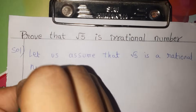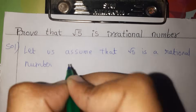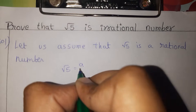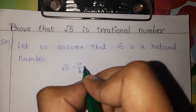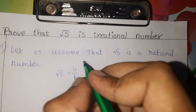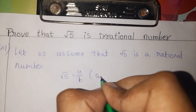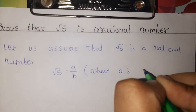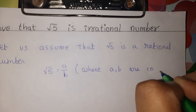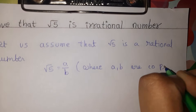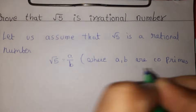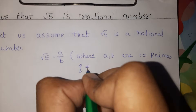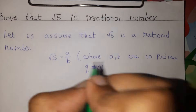A rational number formula is a by b, where a and b are co-prime and have no common factor, and b is not equal to 0.